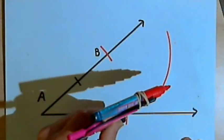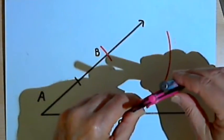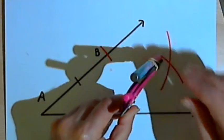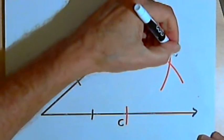And now keeping the compass setting the same, I'm going to move it to point C and draw an arc that intersects the one I just drew. So let's label that point of intersection D.